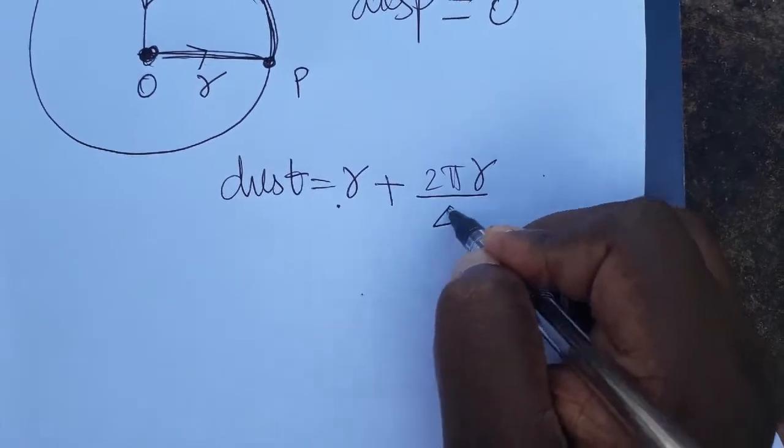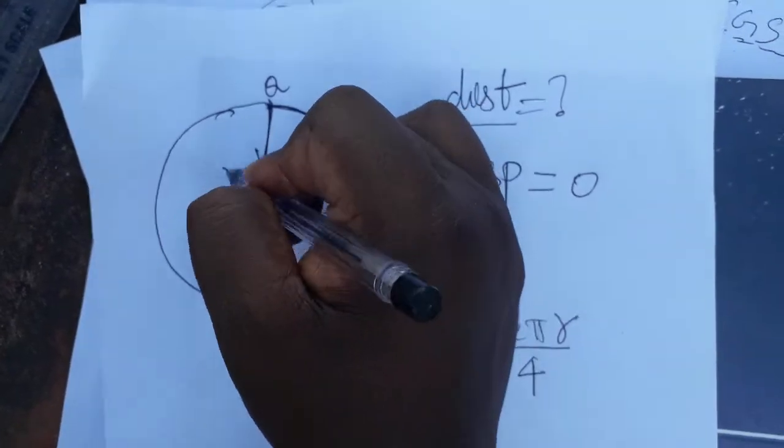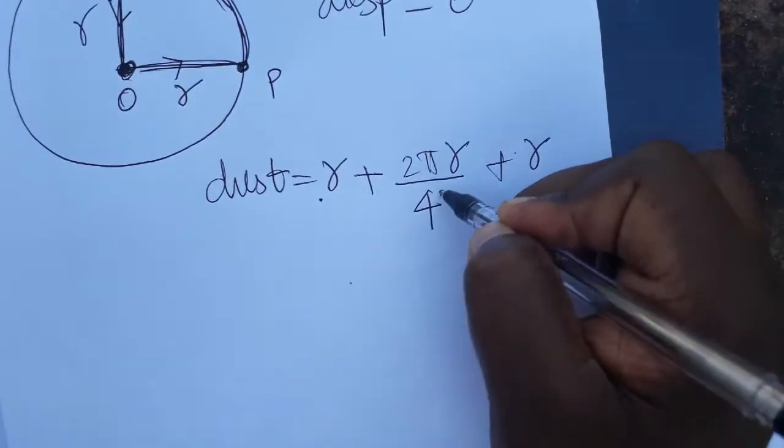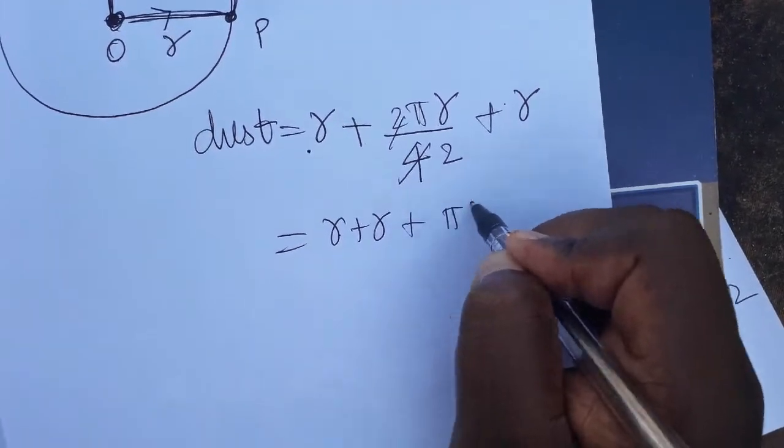It's a quarter portion, means it's divided by 4. Circumference of circle divided by 4. Again it went to the r distance, plus r.